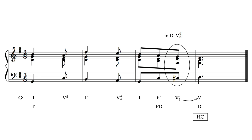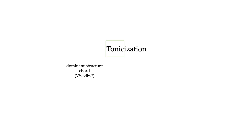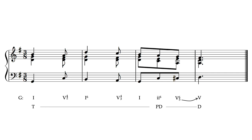This is what we mean by tonicization. Notice what this ends up doing: that passing motion is now expanding the predominant function until we get to the cadential dominant. The word tonicization contains 'tonic.' With a tonicization, we're taking a dominant structure chord — a five or five-seven chord, or maybe a leading tone seventh chord — and applying it to, or evoking the leading tone of, some diatonic chord. This whole lecture is about moving toward the dominant chord and how that plays out with different examples.